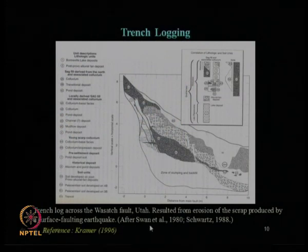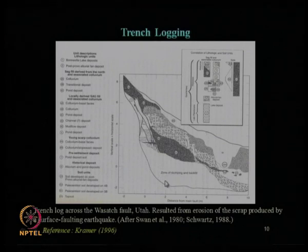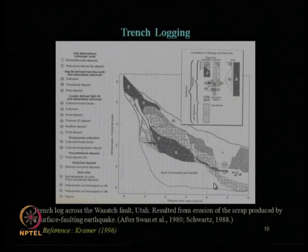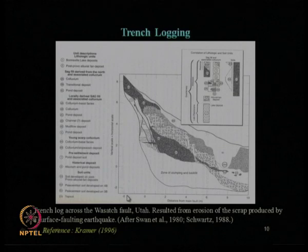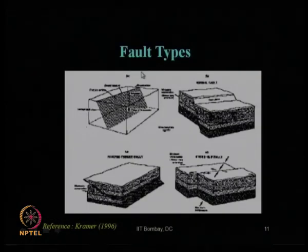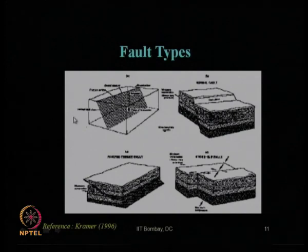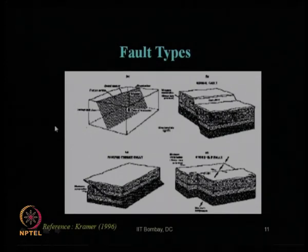Coming to trench logging — this picture is presented by Swan et al. in 1980 and modified after Swaths in 1988. It shows various trenches looking at the zone of slumping and backfill material properties. You can see the pond deposit, colluvium, and transitional deposits. Depending on types of material, you can comment on previous seismicity using lithologic unit behavior and distance from the main fault.